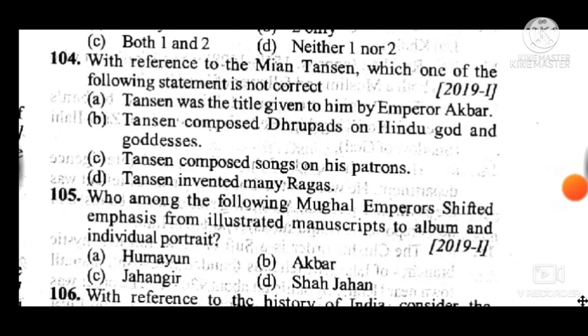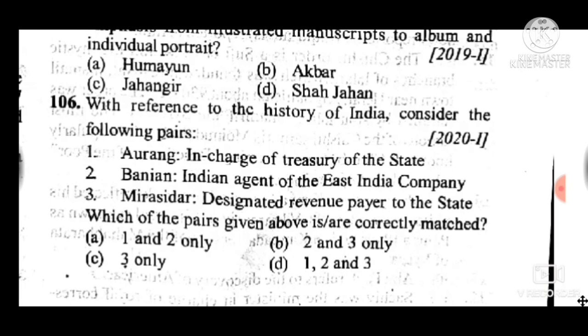We are heading towards the last question of medieval India asked in 2020. Question 106: With reference to the history of India, consider the following pairs — answer is B, two and three statements are correct. With this question 106, we have completed the medieval history questions asked in the preliminary examination from 1997 to 2020.